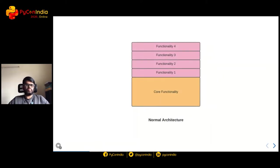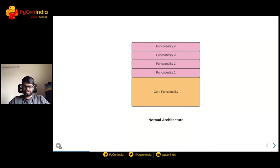In a normal architecture, how does the code look? You have a core functionality and other functionality built on top of it. In our case, the core functionality is getting the user input and searching for the respective results. Other functionalities include rendering the output and exporting the results in a certain format.